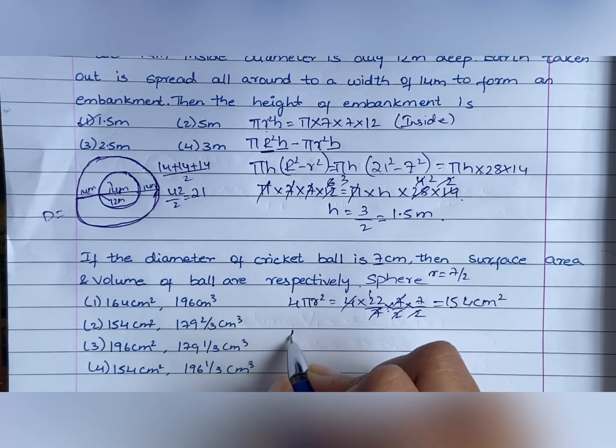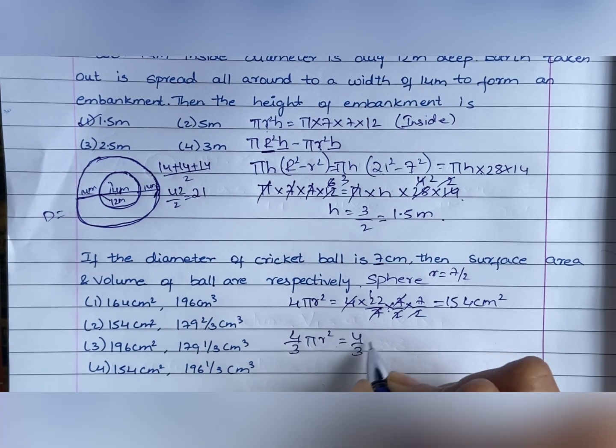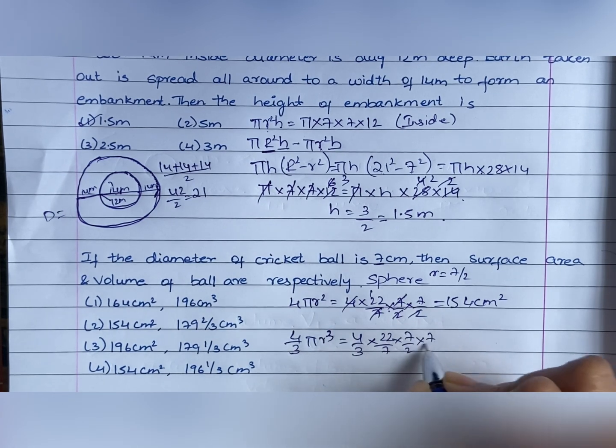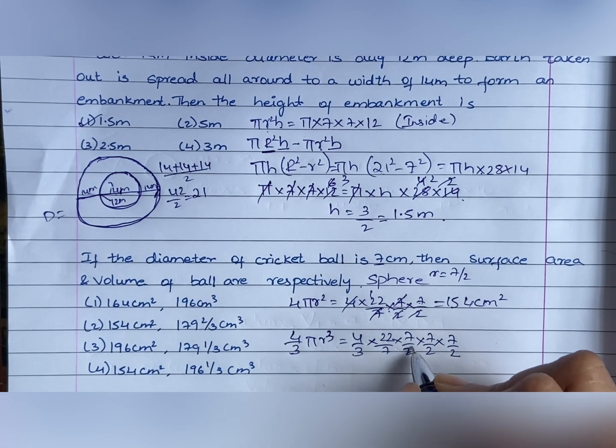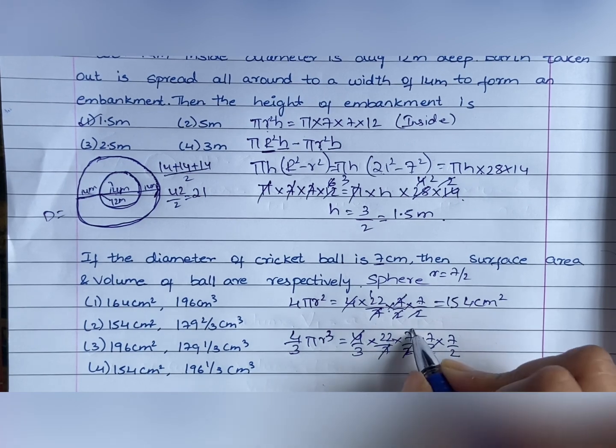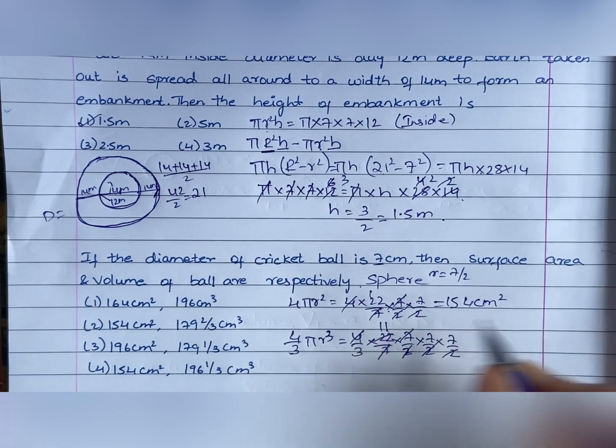Volume. Volume of the sphere is 4 by 3 pi r cube. That is 4 by 3 into 22 by 7. r cube, r is 7 by 2 into 7 by 2 into 7 by 2. So, 22 and 4 cancel out. 7, 7 cancel out. 2, 11 times. 7, 7 is 49. 49 into 11.